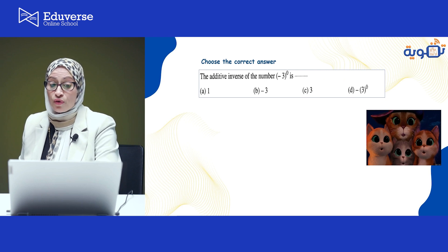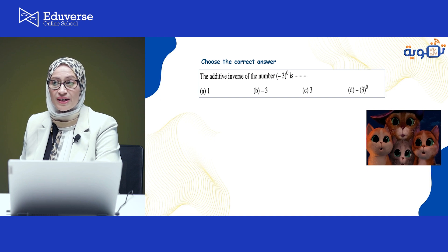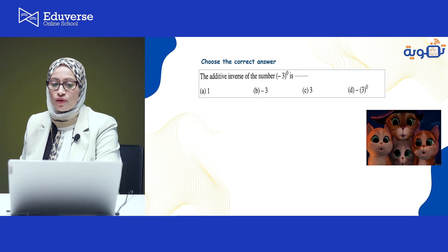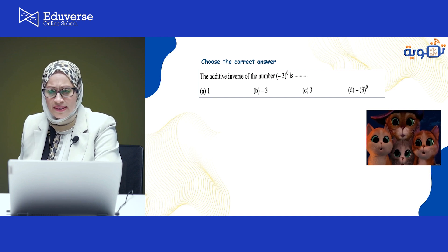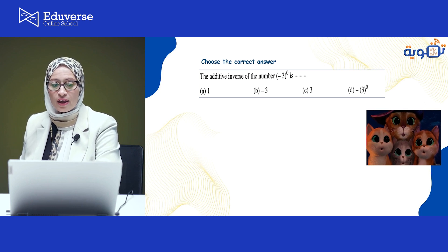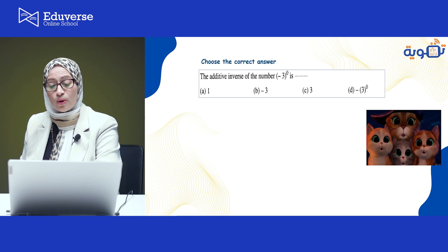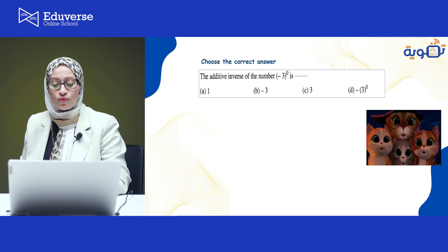The additive inverse of the number (−3) to the power 0. Remember, (−3)⁰ equals 1. The additive inverse means the opposite sign, so the additive inverse of 1 is negative 1. Looking at the choices, the answer is −(3⁰), because the negative is outside the bracket, meaning 3⁰ = 1, so the answer is negative 1.